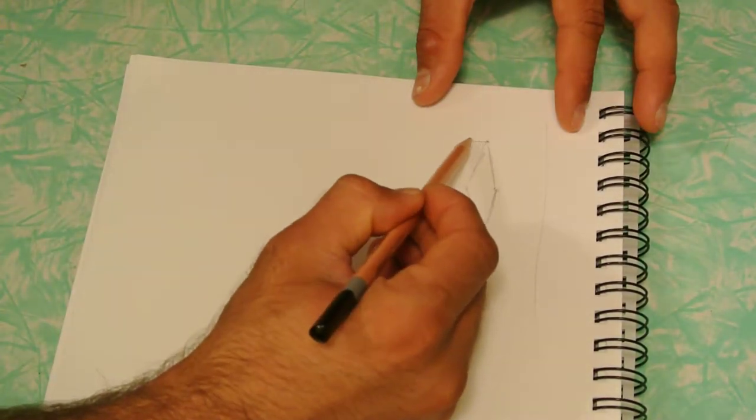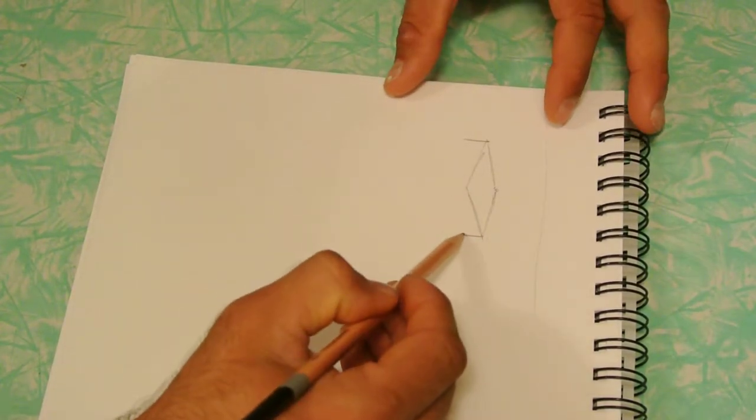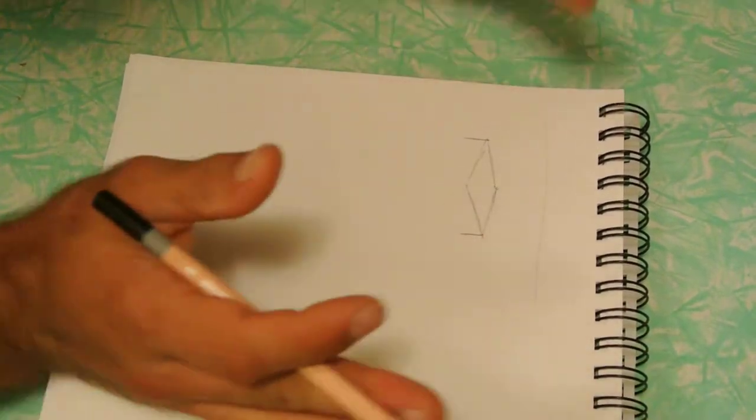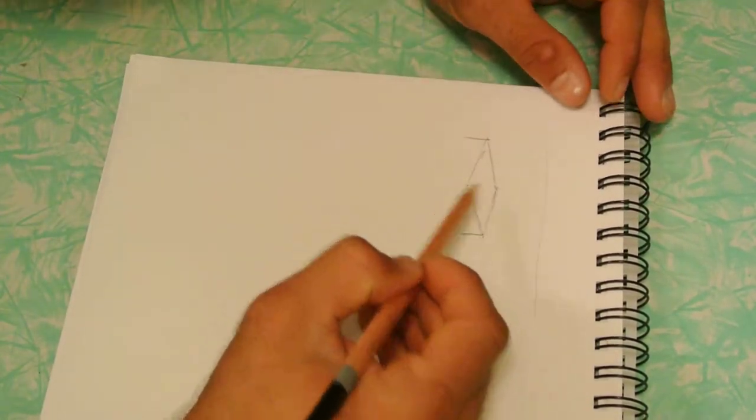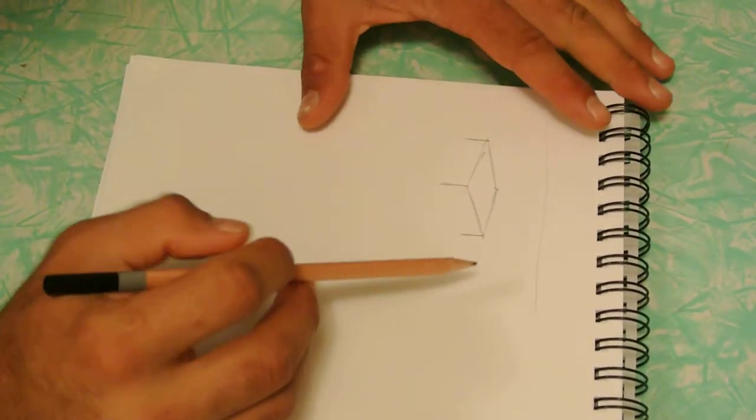Next, you're going to draw a couple of lines coming down right here, making sure they're running parallel with the paper so it doesn't look like your box is tilting either way. Then you're going to draw one more line down the middle right here. You're going to make this one a little bit longer than the other two.